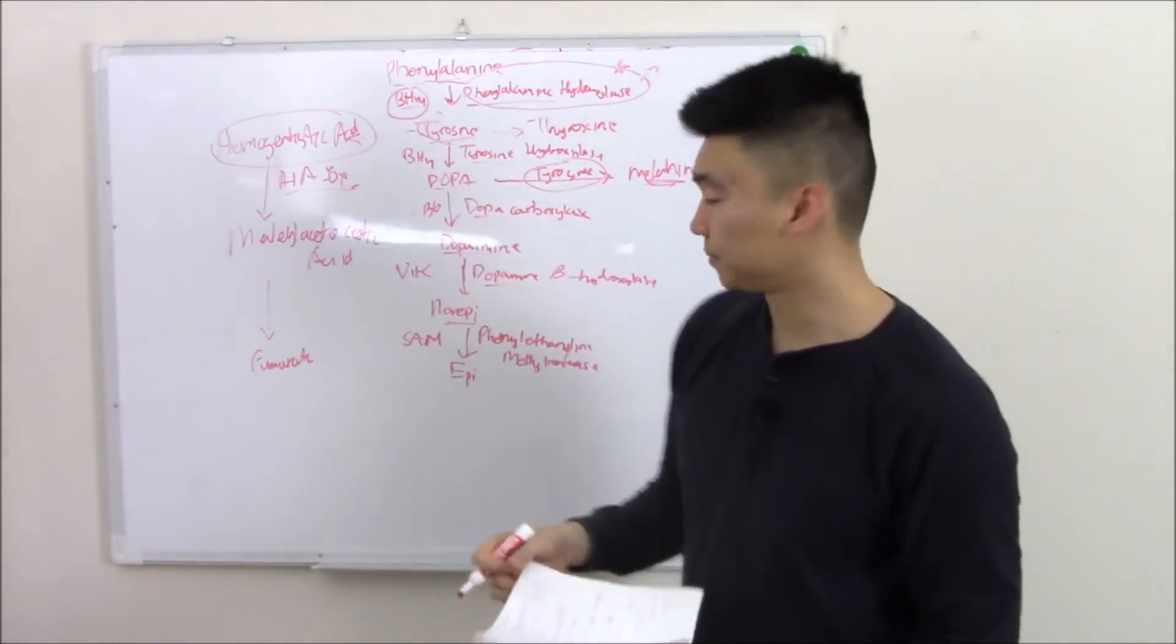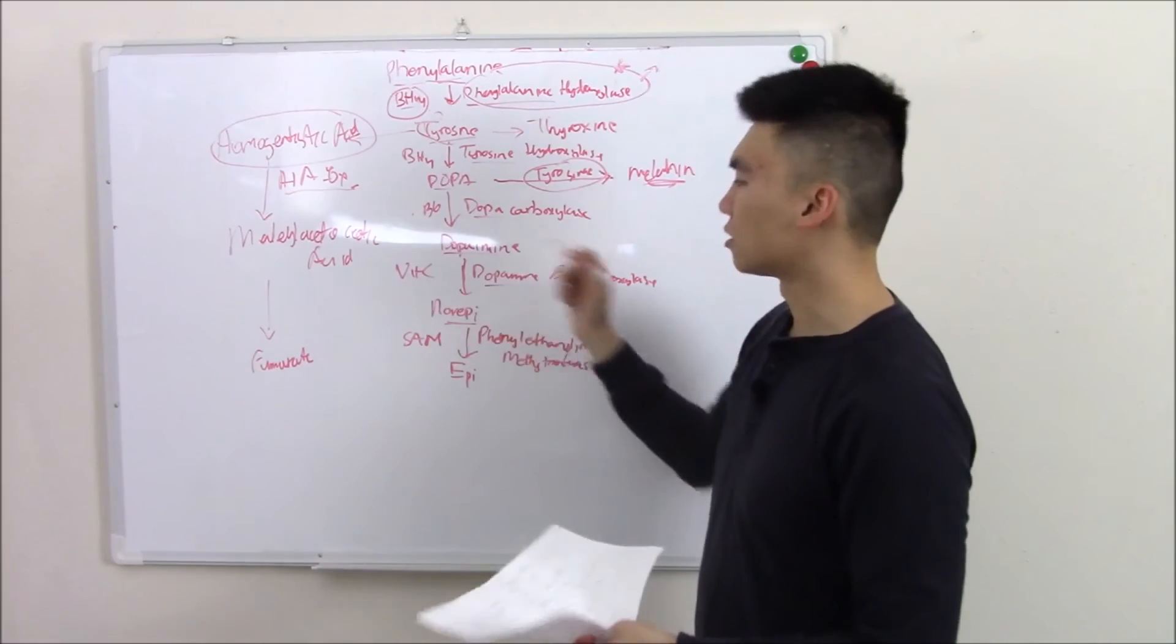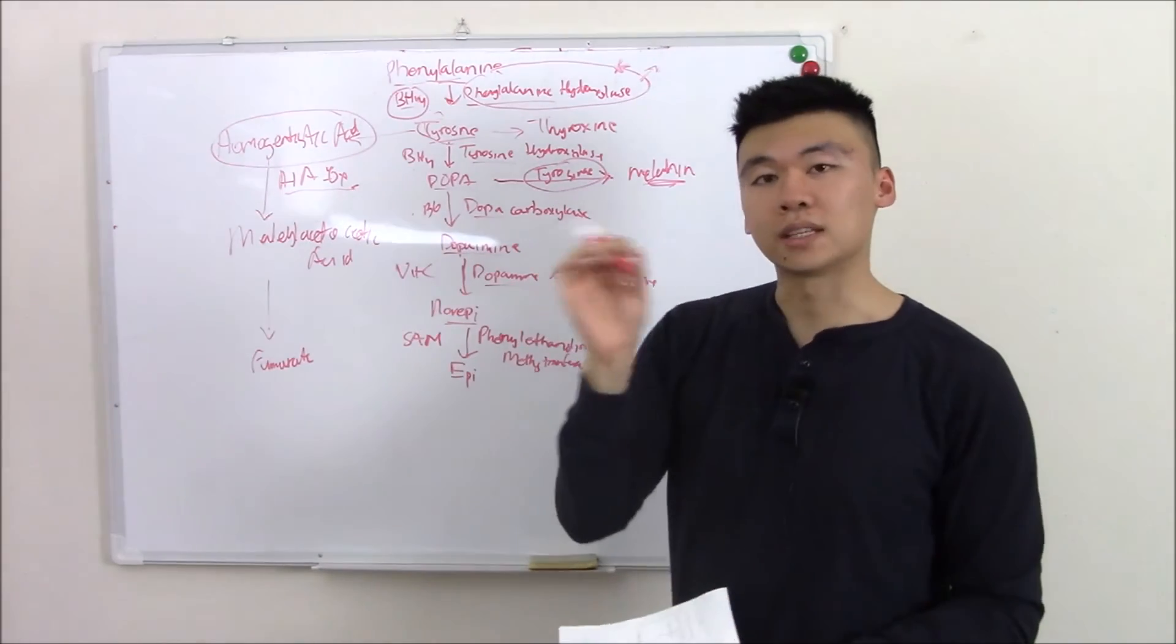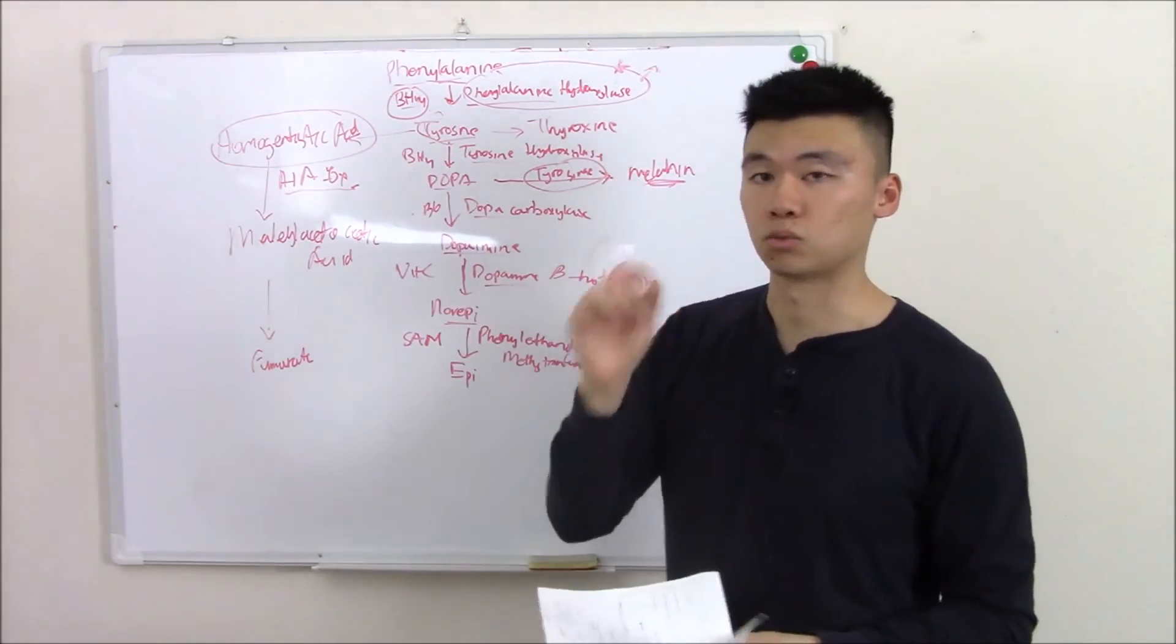That is important because if you have things like pheochromocytoma or things that increase dopamine, what have you, you need to find those metabolites. If it's elevated, you know something is wrong.